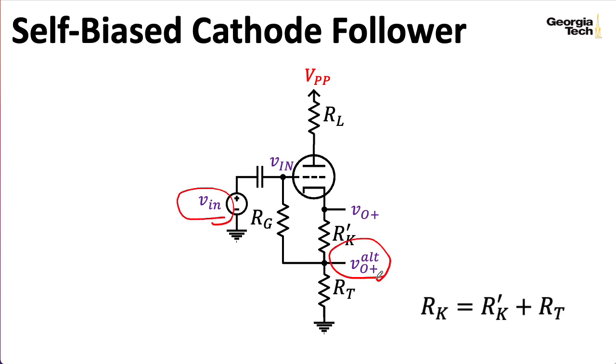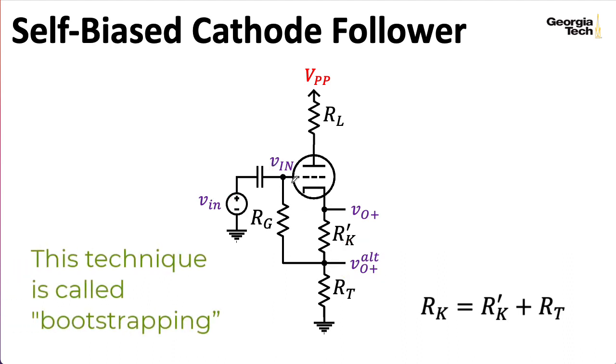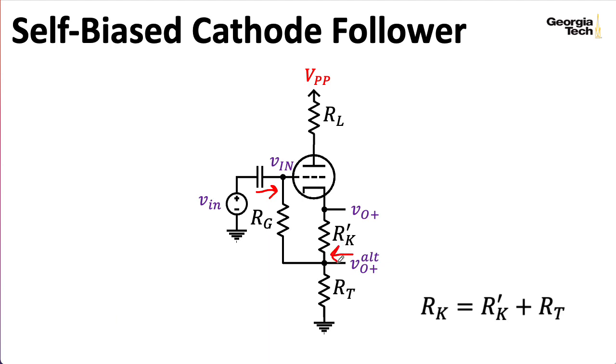This allows RK' to control the grid to cathode voltage, and it also gives us a neat effect in that it gives us an extremely high input impedance that's a lot bigger than RG itself. The input voltage here is being copied at this point, albeit with a loss. But the net effect is you have two small signal voltages that are very close to each other, so very little current is actually flowing across RG, so it looks like there's a very big input impedance here.